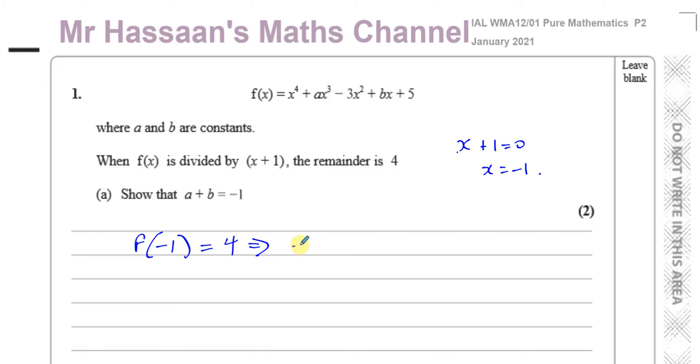Let's put -1 into this. What this means is I'll put -1 instead of x. So (-1)^4 + a(-1)^3 - 3(-1)^2 + b(-1) + 5, and all of that should give me 4.